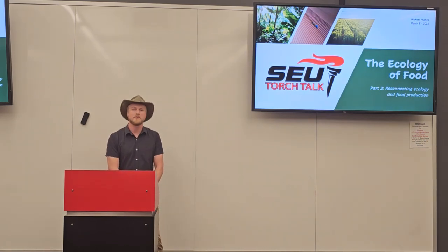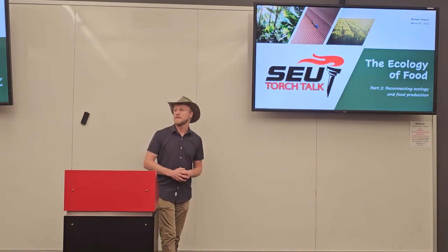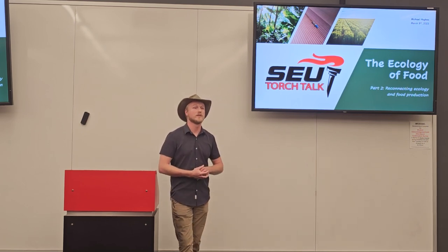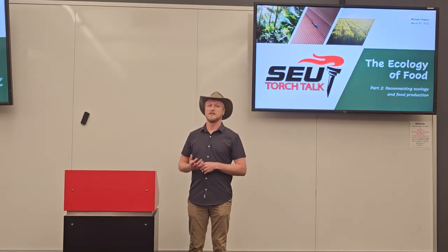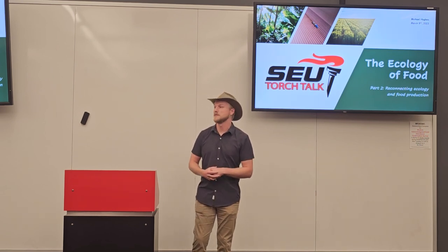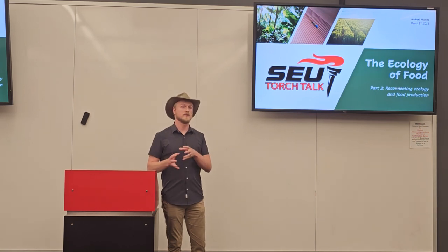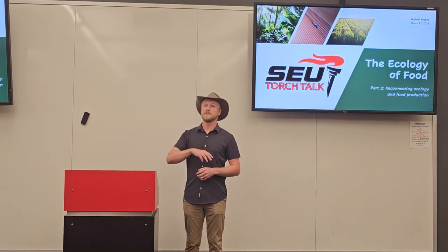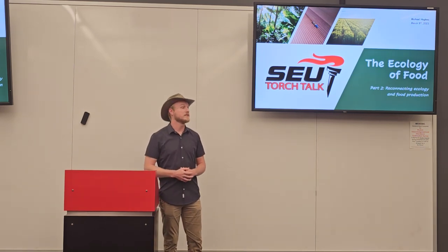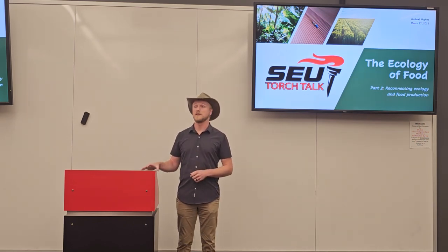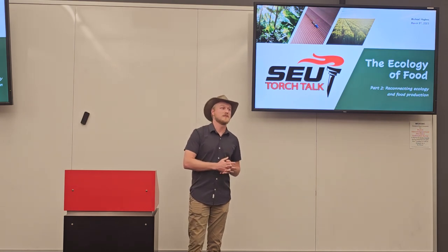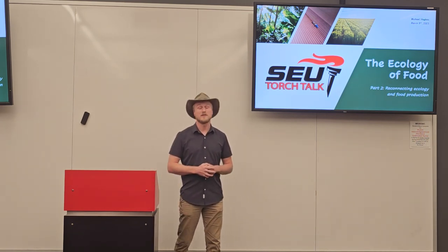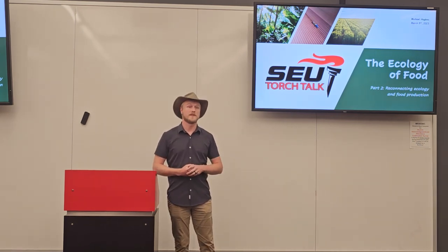Thank you all for being here. Welcome back for the second part of this talk on the ecology of food production systems. In the last talk, we discussed how important ecology is in understanding how food production systems actually work. We talked about the importance of connectivity and diversity in making systems that function really well and are resilient to change. In particular, we talked about how if you have a diverse array of plants in a system, they pump a diversity of root exudates into the ground, which attracts a diversity of soil microbiota, which re-fertilizes the soil.